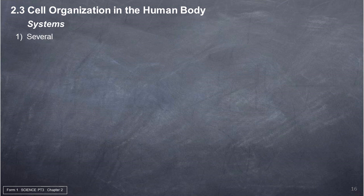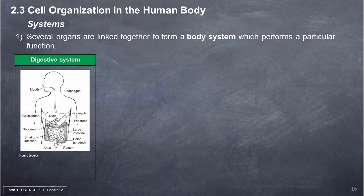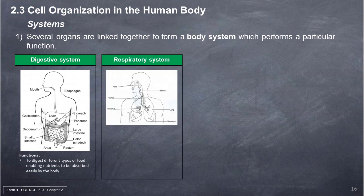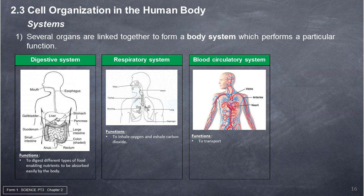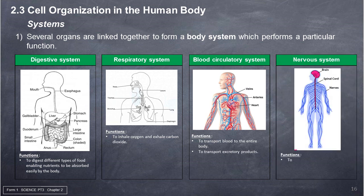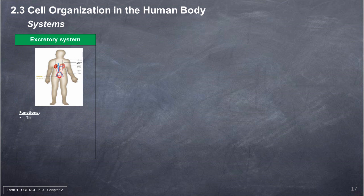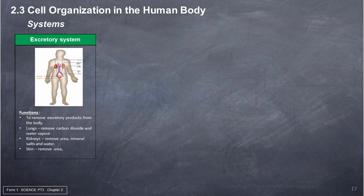System. 1. Several organs are linked together to form a body system, which performs a particular function. Digestive system: to digest different types of food, enabling nutrients to be absorbed easily by the body. Respiratory system: to inhale oxygen and exhale carbon dioxide. Blood circulatory system: to transport blood to the entire body, and to transport excretory products. Nervous system: to coordinate and control most nerve activities; to receive external stimuli and coordinate responses. Excretory system: to remove excretory products from the body — lungs remove carbon dioxide and water vapor; kidneys remove urea, mineral salts, and water; skin removes urea, mineral salts, and water.